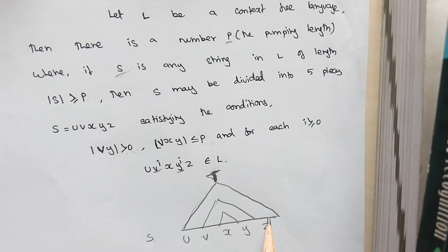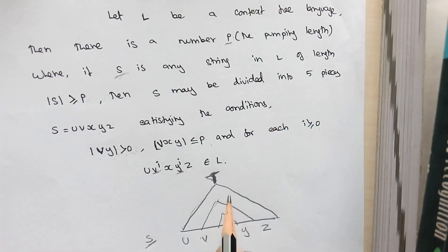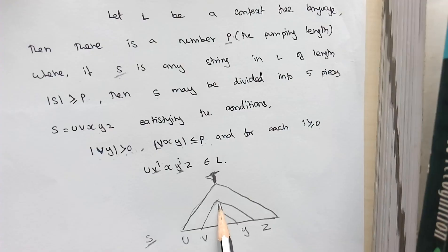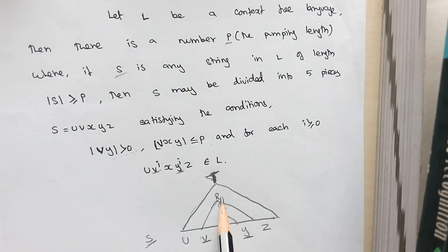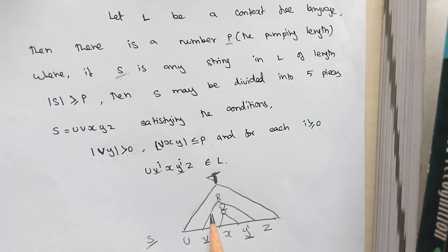Now, if the length of S is greater than the pumping length, it means that somewhere in the grammar there exists a recursion — some variable will be called again and again. This looping occurs in the middle portion, specifically in the V and Y parts. This recursion means some variable has a production for itself and is used at least twice or more in the derivation, which we call the looping portion.